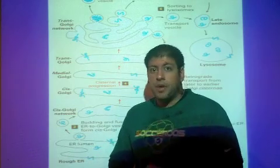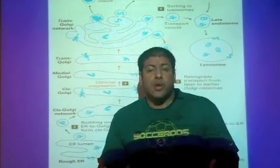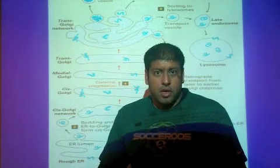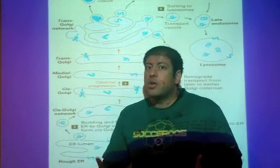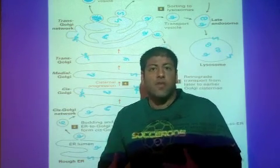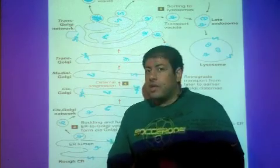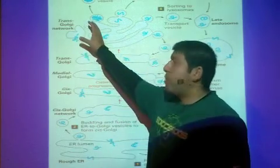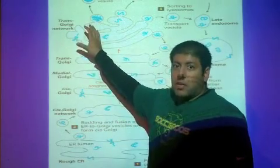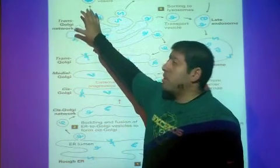For example, insulin. Your body, insulin is used to regulate blood glucose levels. Well, you don't need to be producing and secreting insulin all the time, 24-7. But the insulin is made and prepared and goes through this pathway and is stored in these secretory granules.